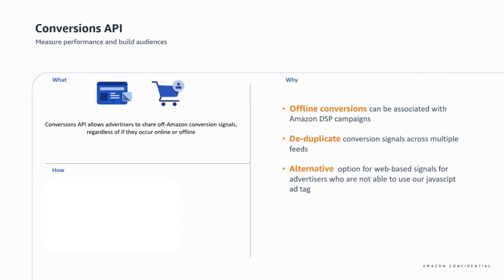The first is if the advertiser wants to associate offline conversions with Amazon DSP campaigns. The second use case is if an advertiser wants to deduplicate conversion signals across multiple feeds — for example, if you are sending the hashed email via both online and offline fields, you will be able to specify which one you count and in which campaign. The last one is if the advertiser is not able to use Amazon AdTag — in that case, this API serves as an alternative to send signals dynamically through the website.